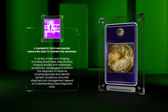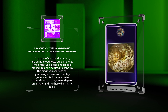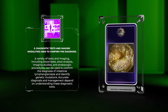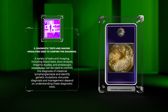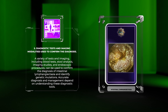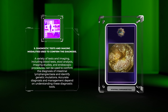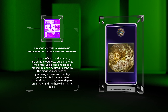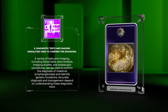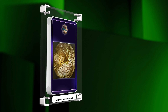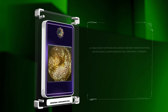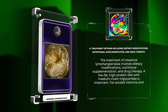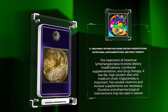A variety of tests and imaging, including blood tests, stool analysis, imaging studies, and endoscopic procedures, can be used to confirm the diagnosis of intestinal lymphangiectasia and identify genetic mutations. Accurate diagnosis and management depend on understanding these diagnostic tools.